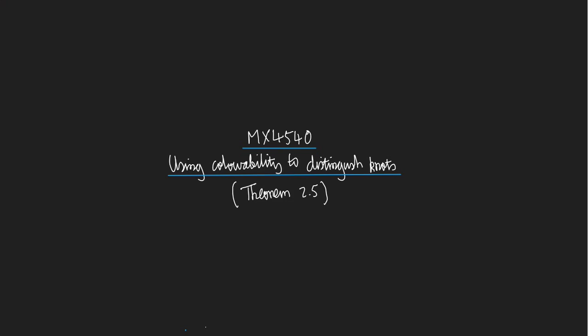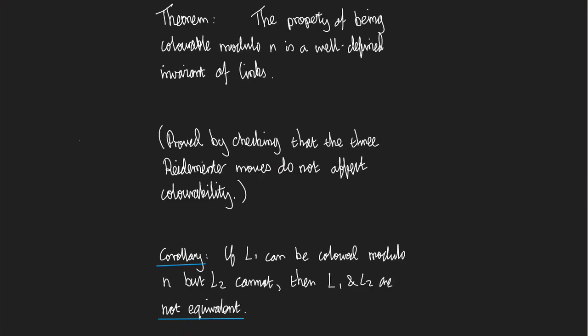Welcome to a mini-lecture about how to use colorability to distinguish between knots. This is an application of theorem 2.5. So here is theorem 2.5 itself, straight out of the notes.